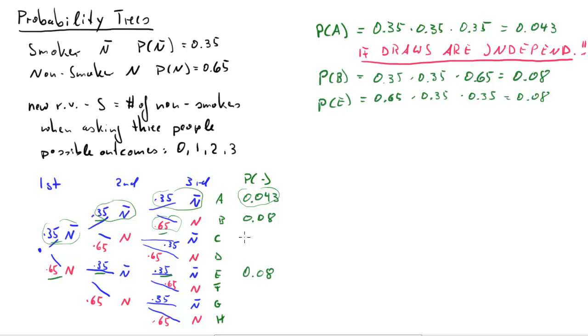So it doesn't matter when we pick one non-smoker and two smokers. There are three outcomes that give this, three outcomes that give. So we can just complete the probabilities for all these possible outcomes. You see the few probabilities always appear a few times.